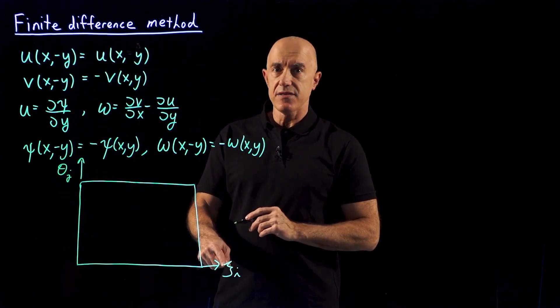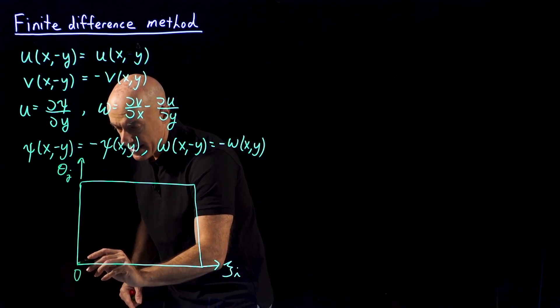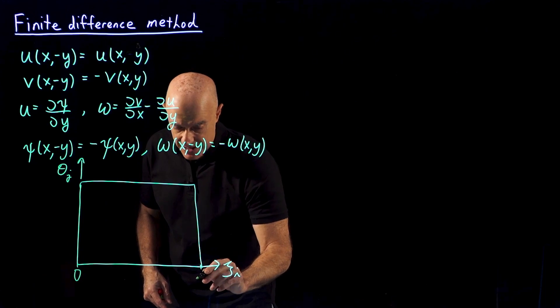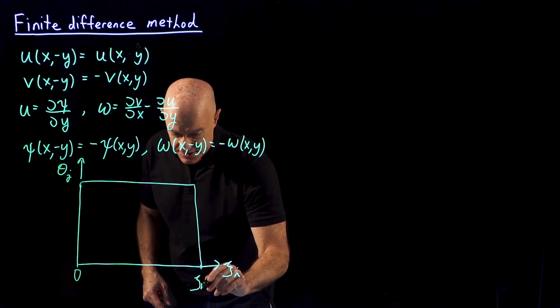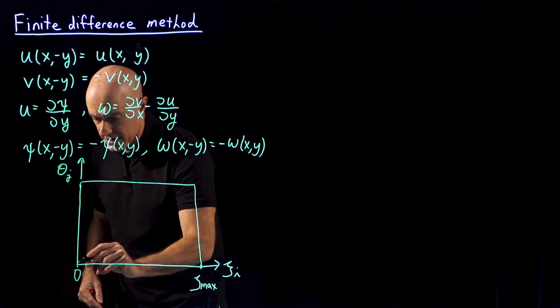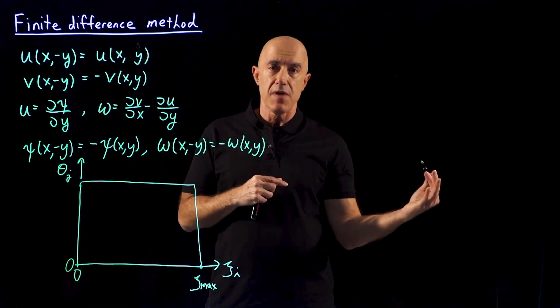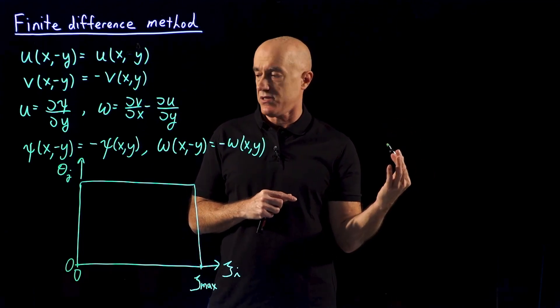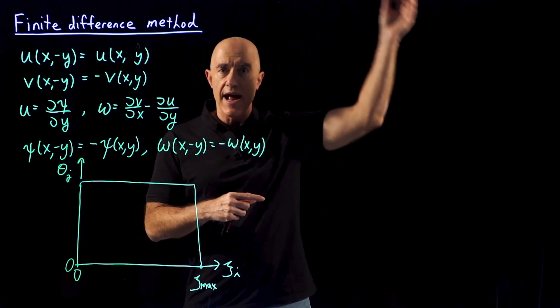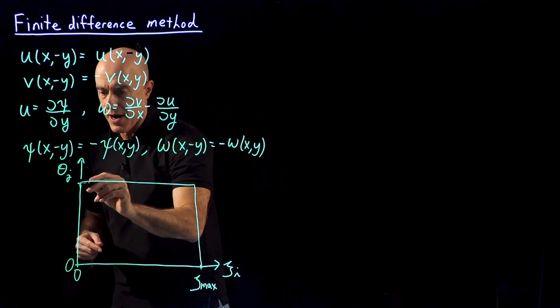ξ starts at 0, which will be the surface of the cylinder, and then goes to some maximum value, which I'll call ξ_max. θ starts at 0, which is in the midline behind the cylinder, and then goes around the top half of the plane until it gets to π.